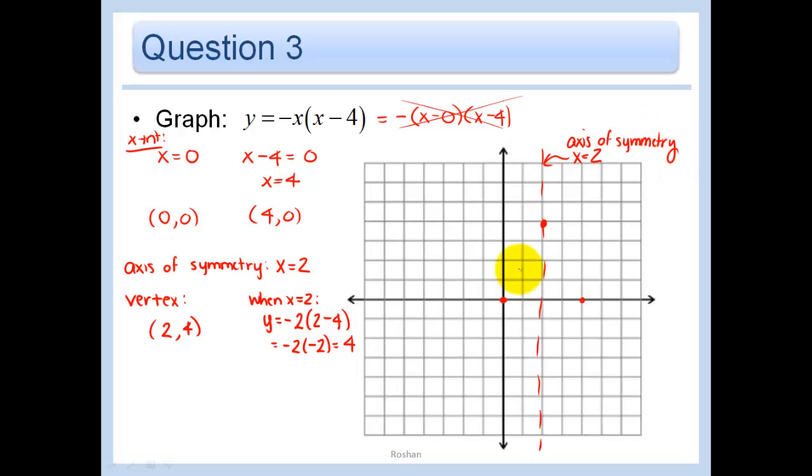We could pick one more point to draw this, to check. But we know that our graph should be opening down because our a is negative. And it does. So that's good.